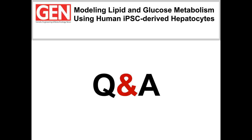Another question for Siobhan: are you differentiating the hepatocytes from the CIRM bank lines, or is CDI making them? CDI is making those. They have access to the CIRM bank and are making the specific cells that harbor a mutation associated with NASH into iPSC hepatocytes. As I understand, those will be available to customers to use as part of their drug discovery platform.